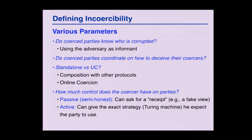So why are there so many attempts to define incoercibility? The reason is that the problem has many parameters to take into account. There are questions like: do coerced parties know who is corrupted so that they avoid them in the protocol? Do coerced parties know each other and can they coordinate to cheat their coercers? Say that me and Rosario are both coerced — can we go behind the back of the mafia boss and coordinate the way we're going to deceive?